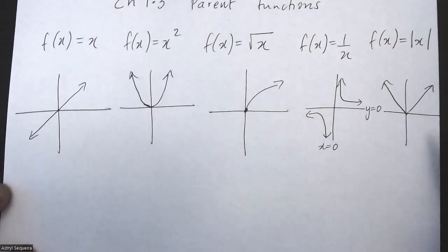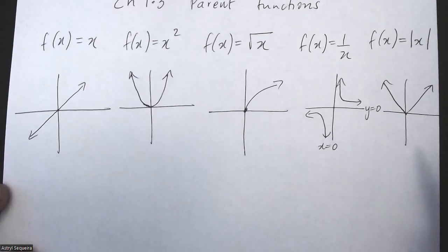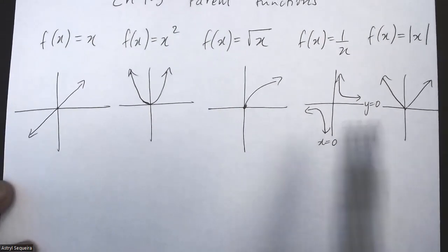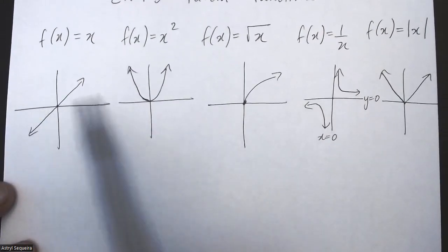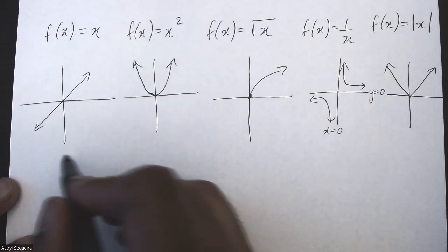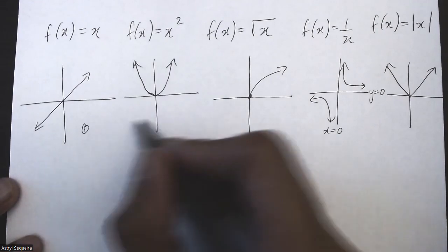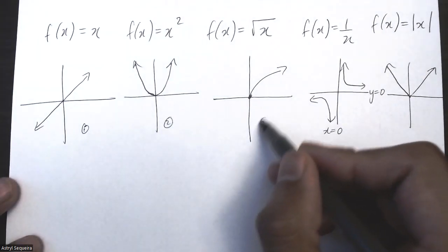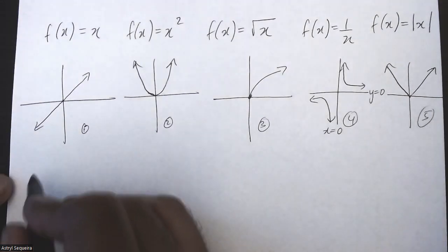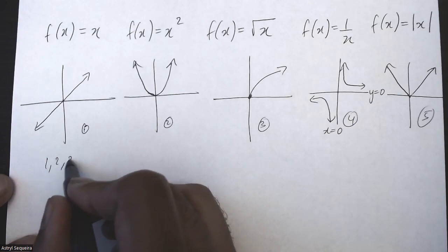But we will talk about a few properties. One of the things is we just want to compare functions over here and see which properties are similar and which properties are different. For example, if I compare all of them, these four have an x and y-intercept of zero. So I'll label this 1, 2, 3, 4, 5.